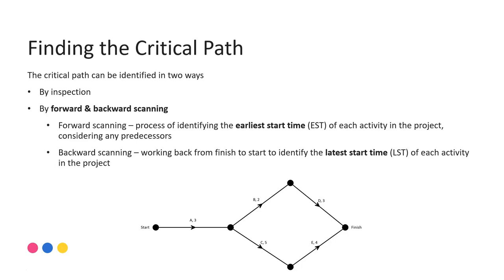Forward scanning is a process of identifying the earliest time that each activity could start in the project, taking into consideration all of the predecessors. Backward scanning is then a way of working from the finish back to the start and identifying the latest time that each activity could commence. Where the earliest time and the latest time are equal to each other, that means we have no float, no slack time for that activity, and therefore it's a critical activity.